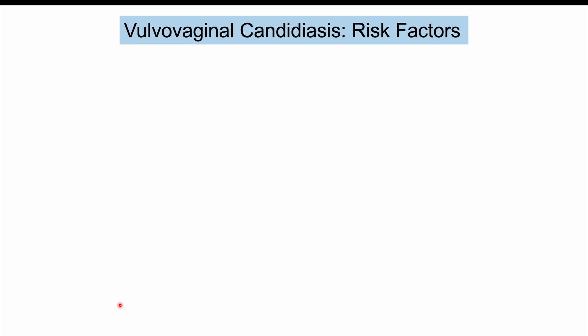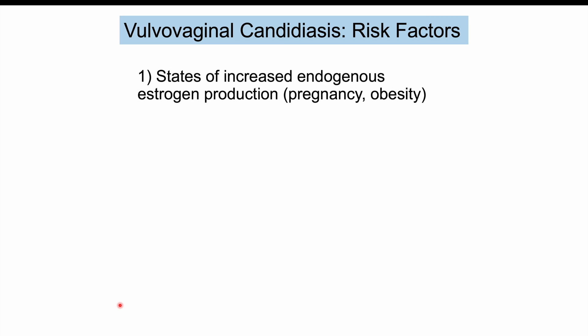Risk factors for vulvovaginal candidiasis include states of increased endogenous estrogen production. Pregnancy is a high estrogen state that can change the vaginal environment and increase glycogen within the vaginal cavity, which can lead to increased likelihood that microbes like candida can use that glycogen for energy, putting pregnant patients at higher risk.